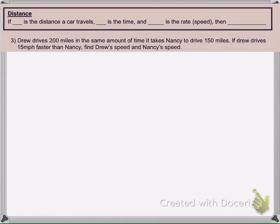So if D is the distance a car travels, T is the time, and R is how fast you're going, your speed, then we know that distance equals rate times time. So if we take a look at this equation here, it says Drew drives 200 miles in the same amount of time it takes Nancy to drive 150 miles.